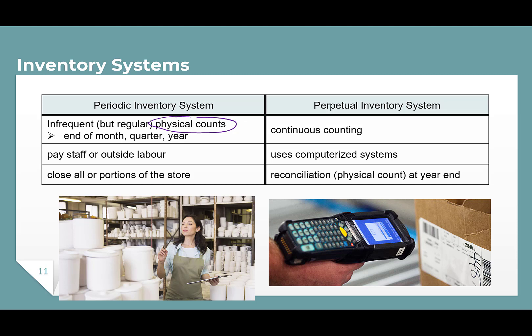In a perpetual inventory system, on the other hand, inventory is counted and updated continuously. This is possible with the use of computerized systems that include technologies like scanners and barcodes. When an item is sold, the scanner at the register scans the barcode and the company's inventory is reduced by the number of items scanned. Even with the perpetual system, companies still conduct a physical count of their inventory, usually at the end of the year, to ensure the accuracy of their systems. Sometimes there will be a discrepancy between how much inventory is physically left and how much the system says is left — that difference is usually caused by theft, or as we say, inventory shrinkage. Perpetual systems can be used to determine inventory shrinkage; periodic systems cannot.